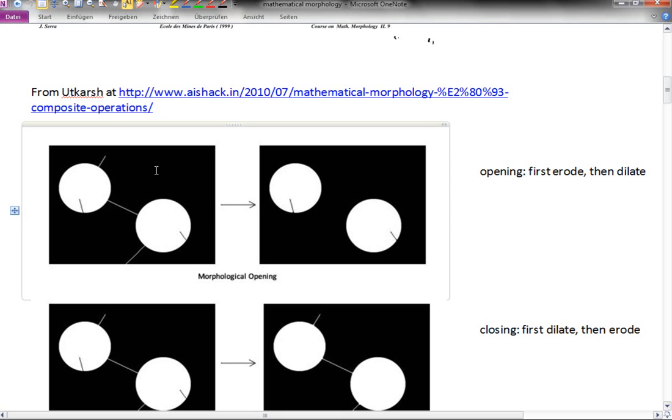In the erosion step, what will happen is that thin structures disappear and these gaps here will become wider. That would be the result of erosion. Afterwards you can dilate, but the structures which are gone can of course not be brought back by dilation. But the gaps can again be made more narrow, giving you the result on the right hand side.